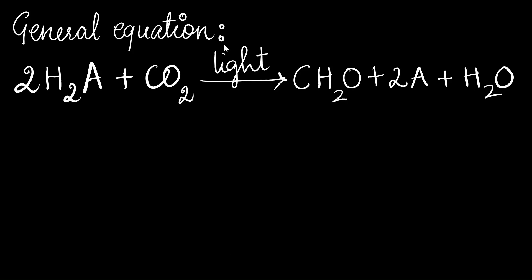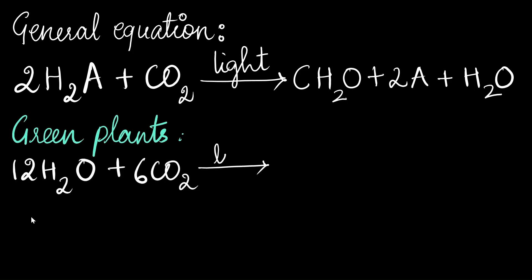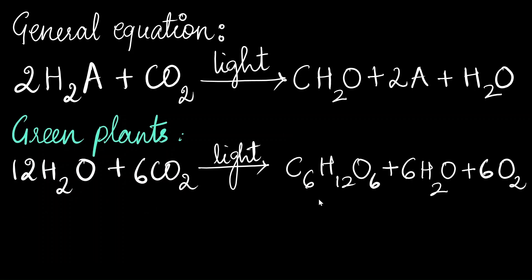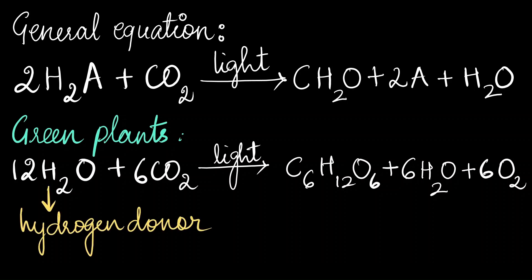Since the photosynthesis of purple bacteria and that of plants were very similar, Van Neel proposed that in plants, light is used to break up water into hydrogen and oxygen. For green plants, the equation would be: water and carbon dioxide, in the presence of light, gives sugar, water, and oxygen. In green plants, water is the hydrogen donor and gets oxidized to oxygen. Based on his observations, he inferred that the oxygen evolved at the end of the process comes from water, not from carbon dioxide.